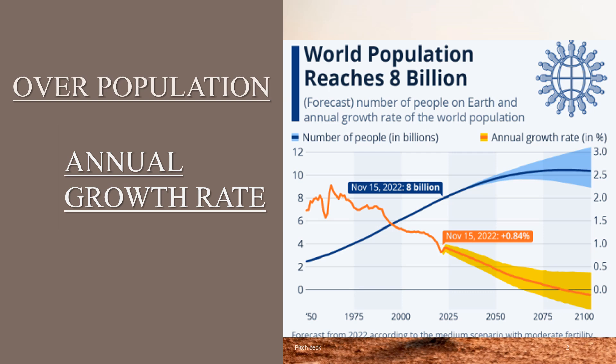If we talk about annual growth rate, we will discuss what is overpopulation compared to the UN — which is our growth rate. In 2000, it was 8 billion crossed, but in 2025 its rate is 10.8 billion. The growth rate in percentage is 2.5 percent.